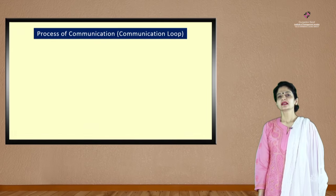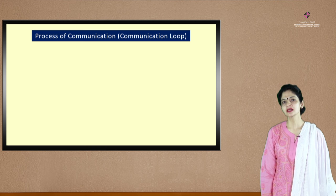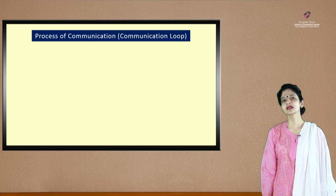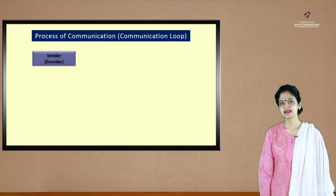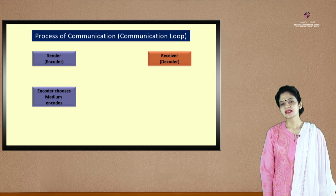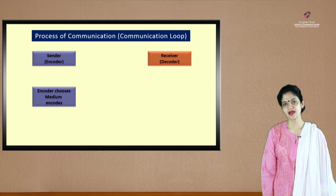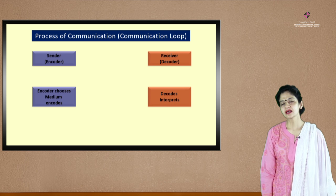We say that communication is about exchange of messages between two people and we call it the process of communication or the communication loop. This loop consists of a sender who codes messages for the receiver who decodes the sender's messages. The sender uses a particular medium according to his or her comfort factor to transfer the message to the receiver, and the receiver interprets it according to his comfort factor.